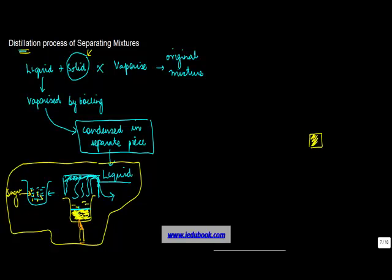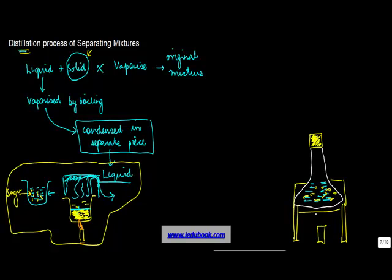Now let's take an example of this distillation in a lab. Say you had a flask containing water and the same dissolved sugar. You will apply heat to this—this candle basically represents heat.